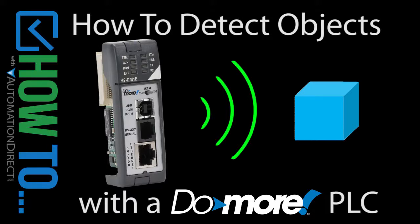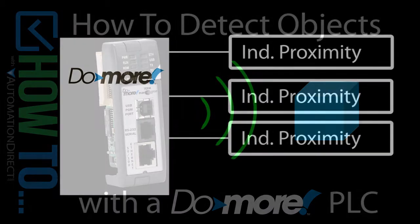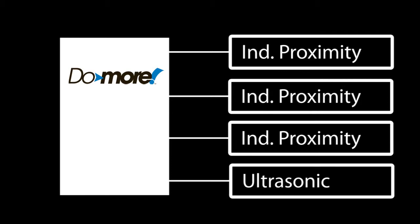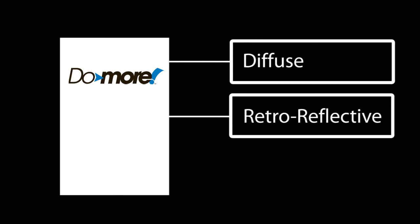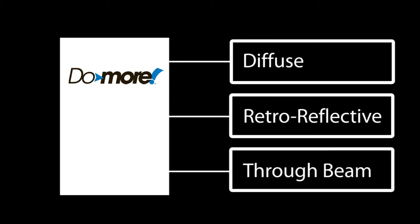Detecting objects with a Do-more PLC is easy. In this video we'll use three proximity sensors, an ultrasonic sensor, and three different types of photo sensors – diffuse, retroreflective, and through beam – to detect the presence of an object.